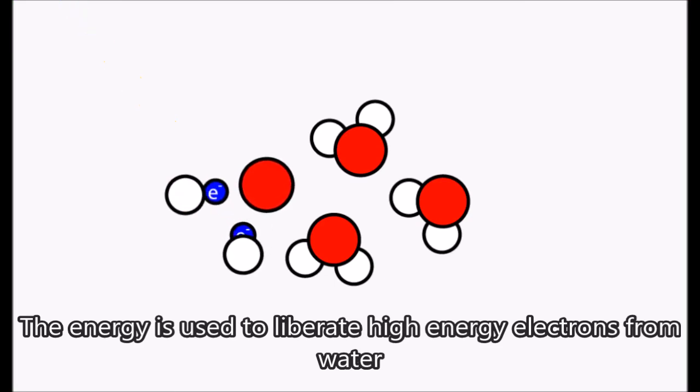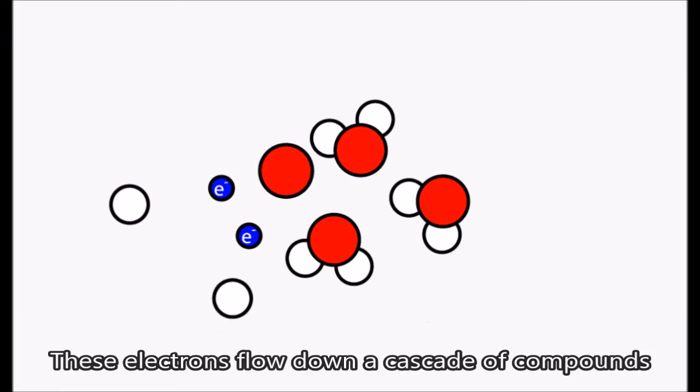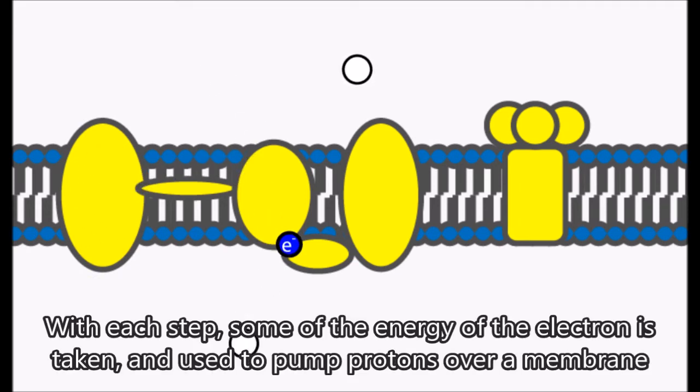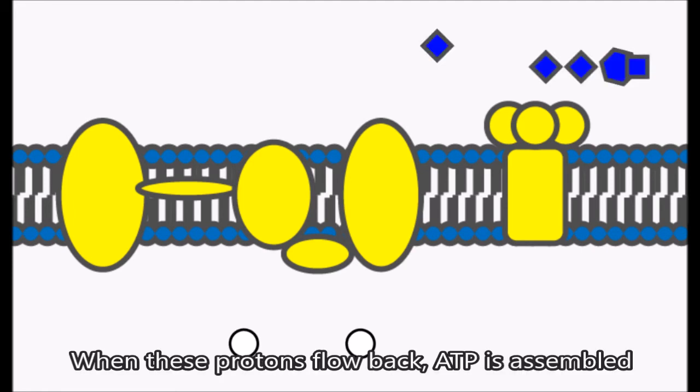The energy is used to liberate high energy electrons from water. These electrons go down a cascade of compounds. With each step, some of the energy of the electron is taken and used to pump protons over a membrane. When these protons flow back, ATP is assembled.